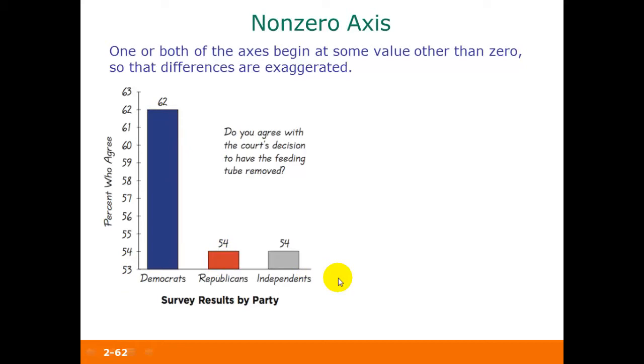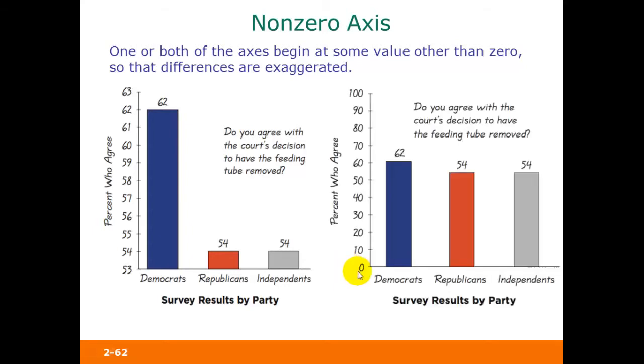If we redraw this graph using a zero axis, so the vertical axis starts at zero instead of starting at 53, notice that this graph looks a lot different. The differences between the percentages are not nearly as exaggerated as they were in the graph on the left side.